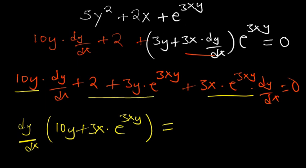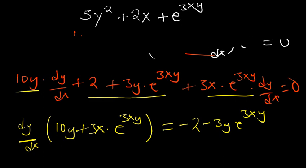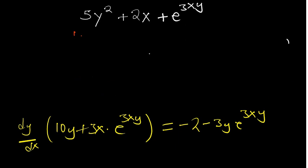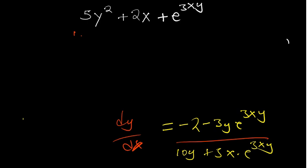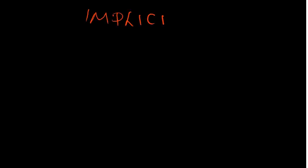So dy/dx times (10y + 3x · e^(3xy)) equals negative 2 minus 3y · e^(3xy). Dividing both sides gives us dy/dx. That is how simple it is to determine the derivative of exponentials using implicit differentiation. If you want to understand more, check out the videos on implicit differentiation and the product rule in the description. Thank you for watching.